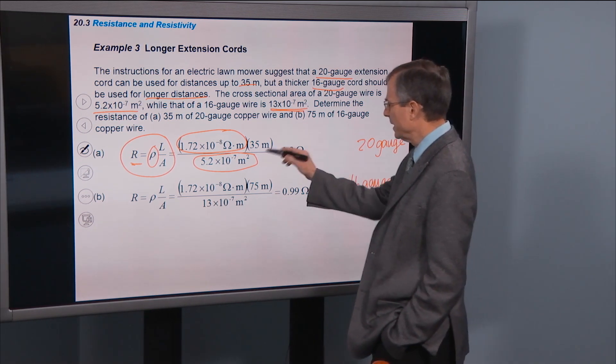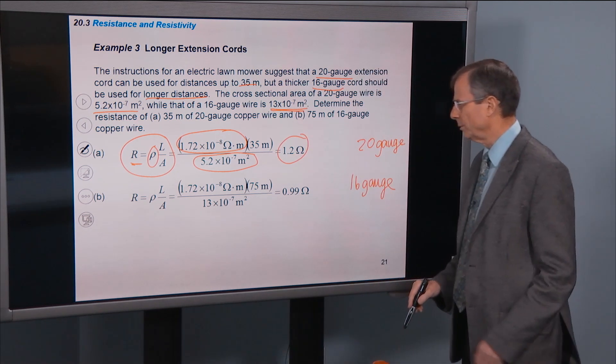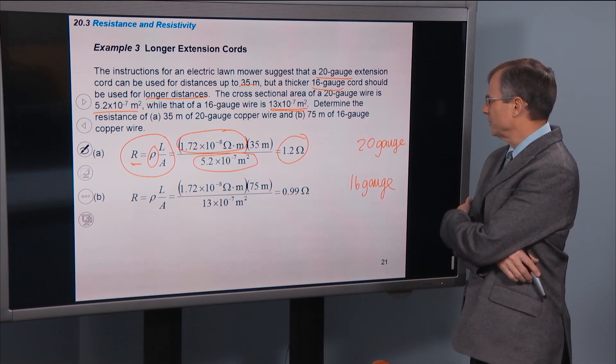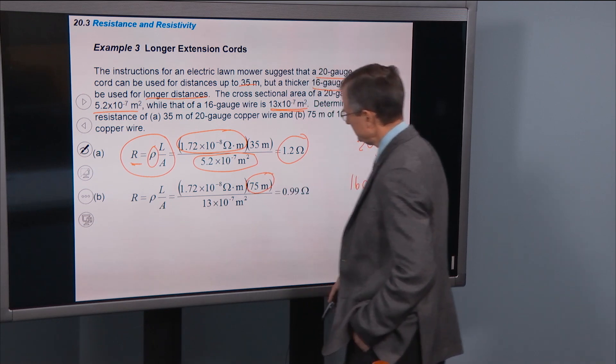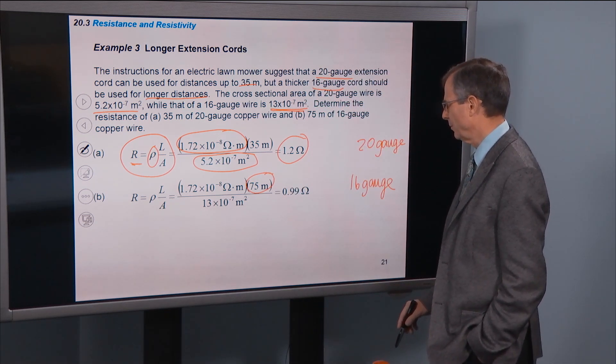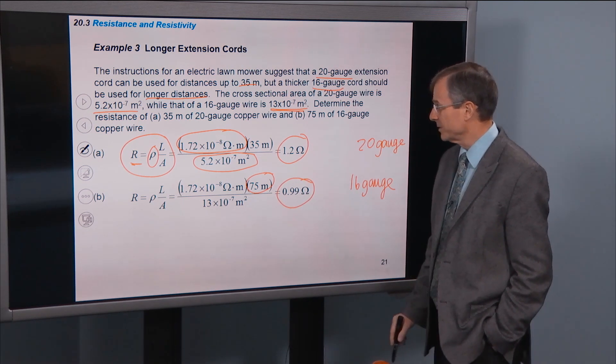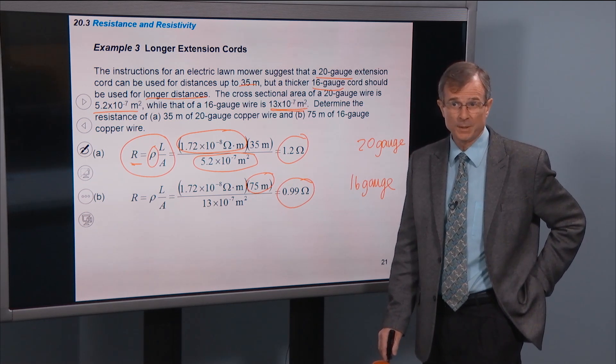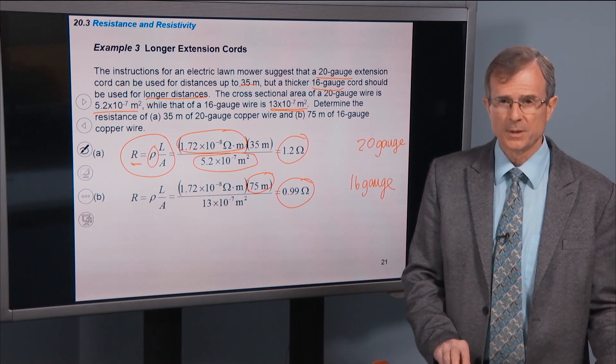So plugging the numbers in for a 35 meter length, you get 1.2 ohms for 35 meters. If you do the calculation for actually 75 meters of this thicker wire, you get a resistance that's even actually less than the resistance for 35 meters of the 20 gauge wire. So that's how you do these kinds of calculations. They're not difficult.